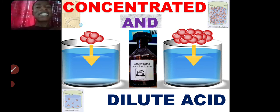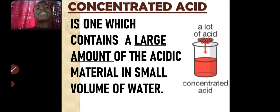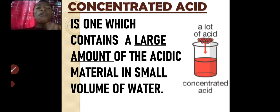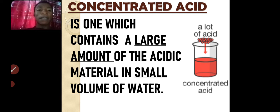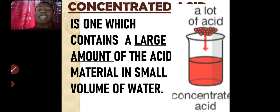When you are talking about acids that are dangerous, that burn the skin, you are talking about concentrated acid. The one with more water is the dilute acid. Concentrated acid is one that contains large amounts of the acid material in small volume of water. That is concentrated acid.